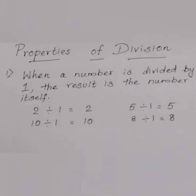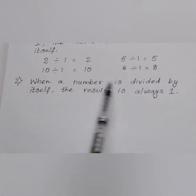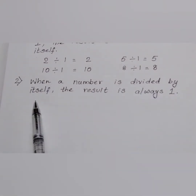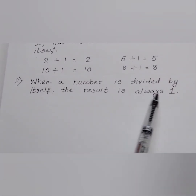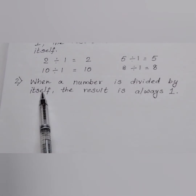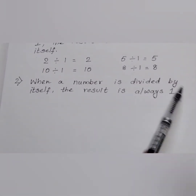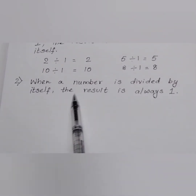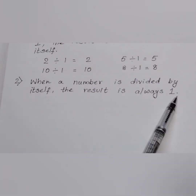Now coming to the second property. When a number is divided by itself, the result is always 1. Let me repeat again: when a number is divided by itself, the result is always 1.